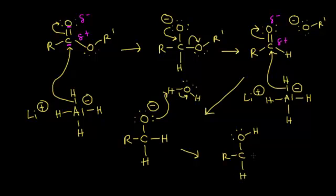We've added on two hydrogens to our original carbonyl carbon. Looking at the original carbonyl carbon, there's actually no hydrogen attached to it over here — both of those hydrogens came from our lithium aluminum hydride. So the reaction happened twice. If you're doing this reaction with a carboxylic acid, it's a similar mechanism — we don't have time to go through it, but you're going to end up with the same product, adding two hydrogens onto that original carbonyl carbon.